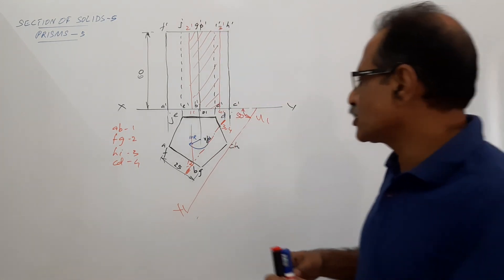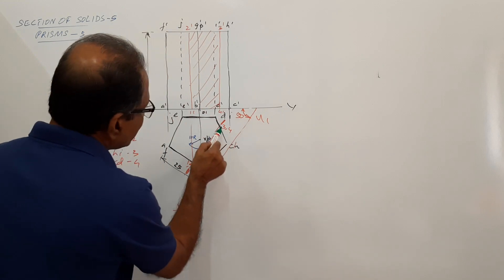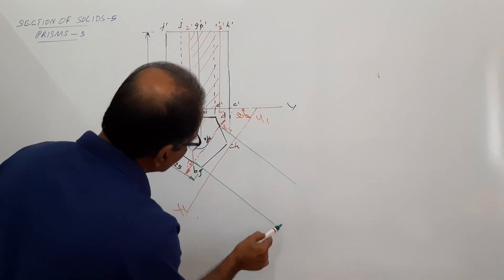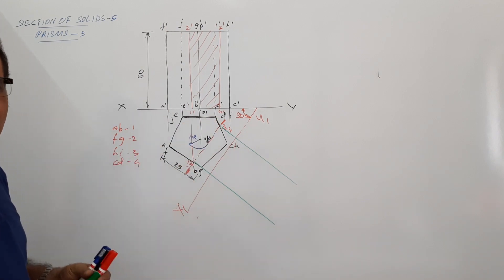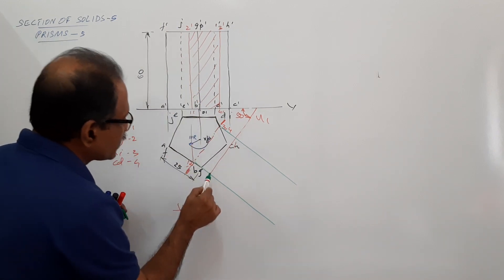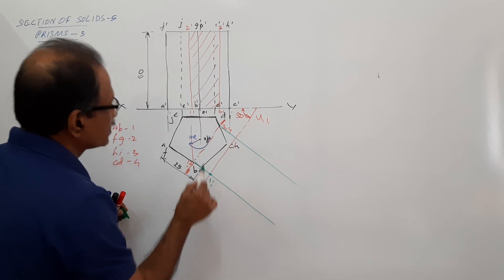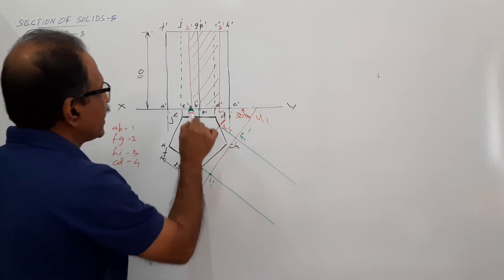Now draw projectors through these points perpendicular to X1Y1. 1 dash is 0 distance from X1, so this is 1 dash. 4 dash is 0 distance from X1, so this is 4 dash.